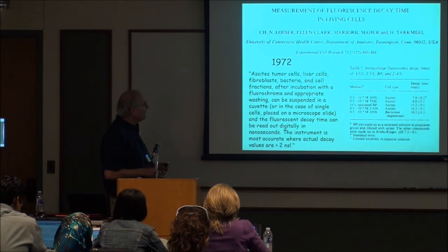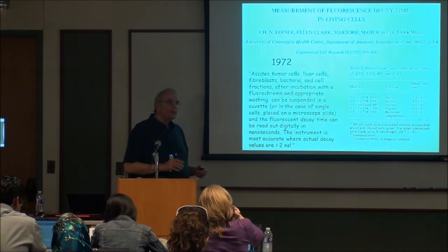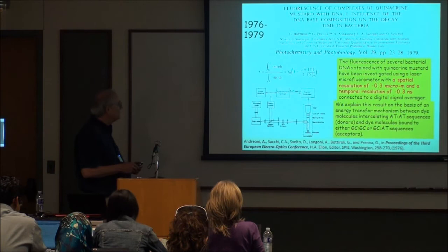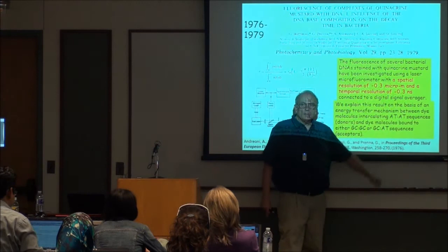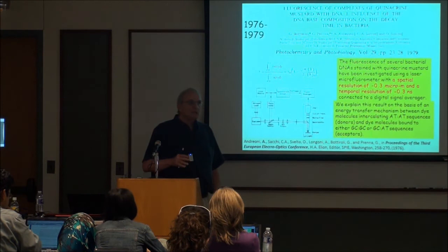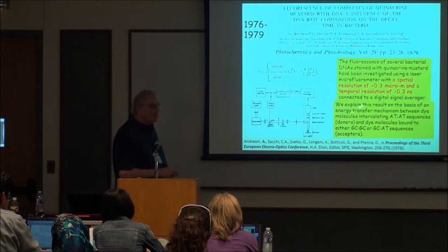In 1972, somebody else — Leuser — did it in a different way and was also interested in biology. It got a big push because physicists were doing this on biological samples. These people from Milan in Italy had a different way, and look at the resolution they had — they went all the way down to 300 picoseconds that they could measure lifetimes in a microscope.